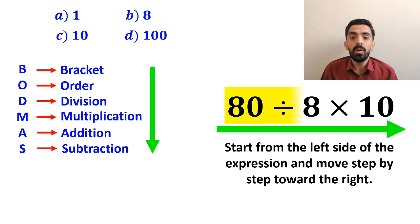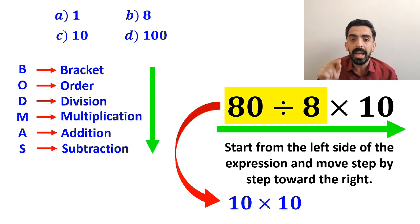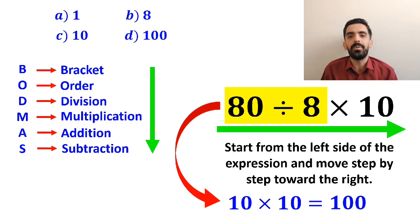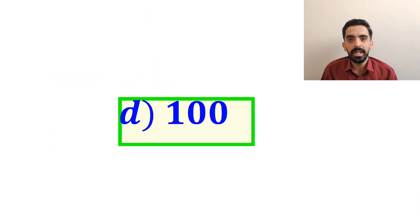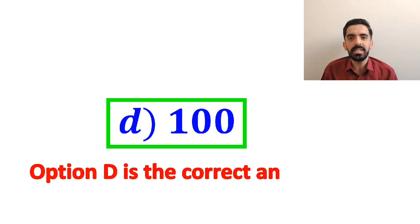So, first, we perform the division between 80 and 8, which simplifies the expression to 10 multiplied by 10. Finally, the value of this expression will be 100. Therefore, option D is the correct answer to this question.